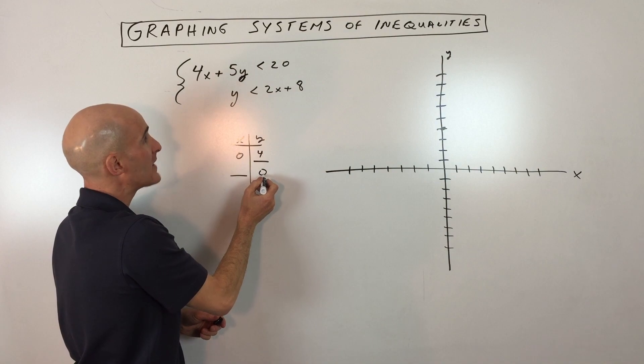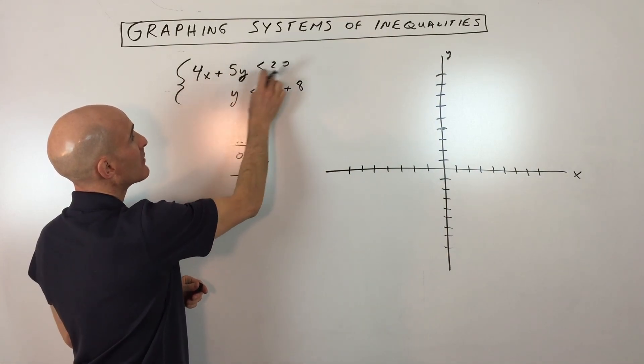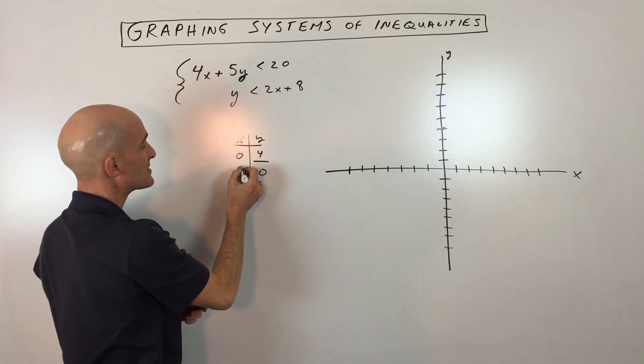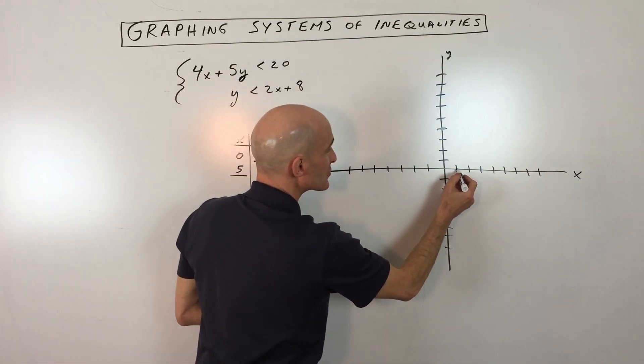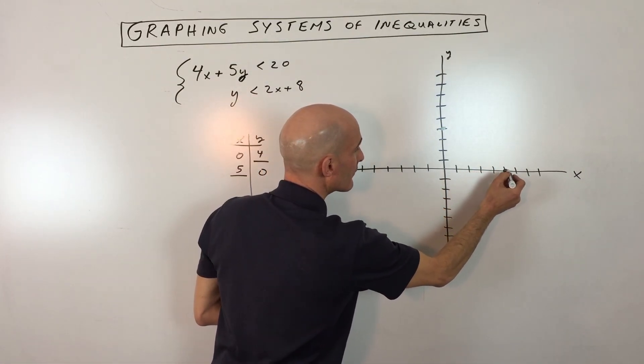Now if we set y to zero, five times zero is zero. Divide both sides by four. You can see that x is five. So that gives us the x-intercept. One, two, three, four, five right there.